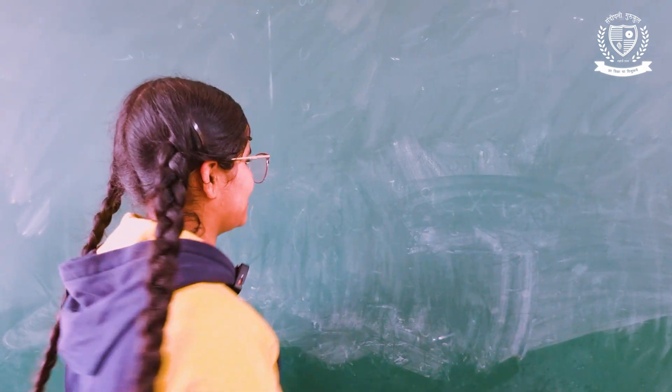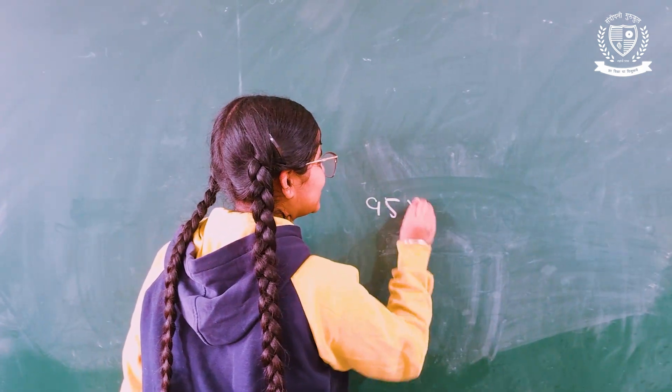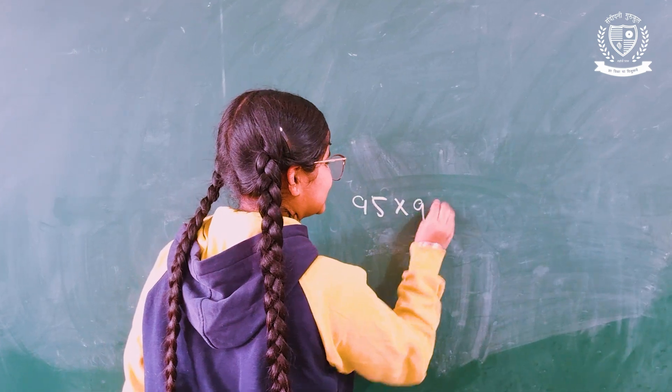Hello everyone, I am Simrith of grade 9. Today I will share a trick to multiply two consecutive numbers. For example, 95 multiplied by 96.